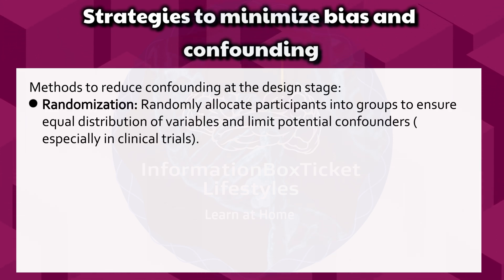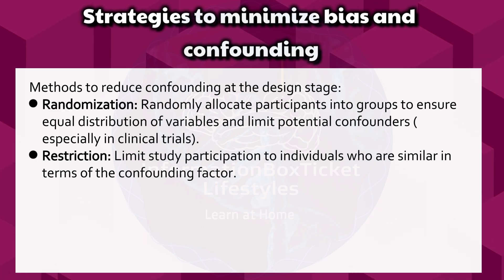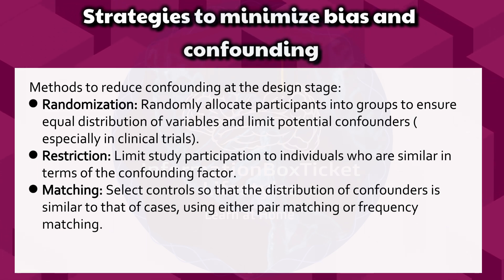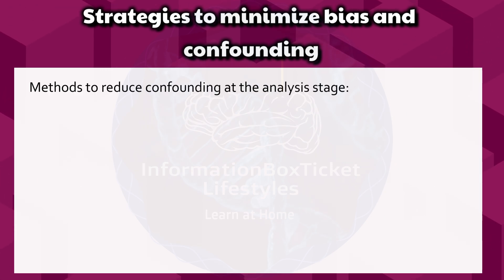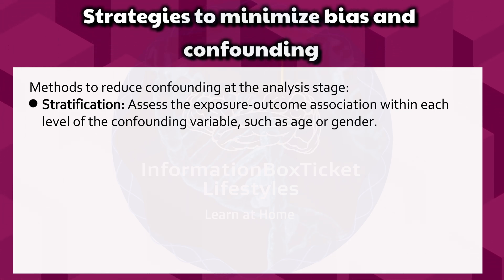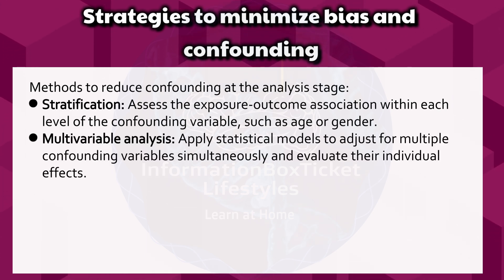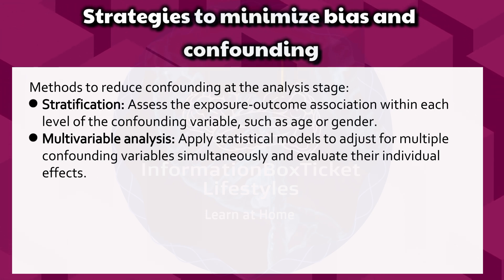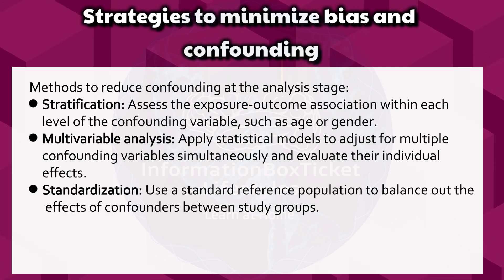Methods to reduce confounding at the design stage include: Randomization — randomly allocating participants into groups to ensure equal distribution of variables and limit potential confounders, especially in clinical trials; Restriction — limiting study participation to individuals who are similar in terms of the confounding factor; and Matching — selecting controls so that the distribution of confounders is similar to that of cases. At the analysis stage: Stratification assesses the exposure-outcome association within each level of the confounding variable; Multivariable analysis applies statistical models to adjust for multiple confounding variables simultaneously; and Standardization uses a standard reference population to balance out the effects of confounders between study groups.